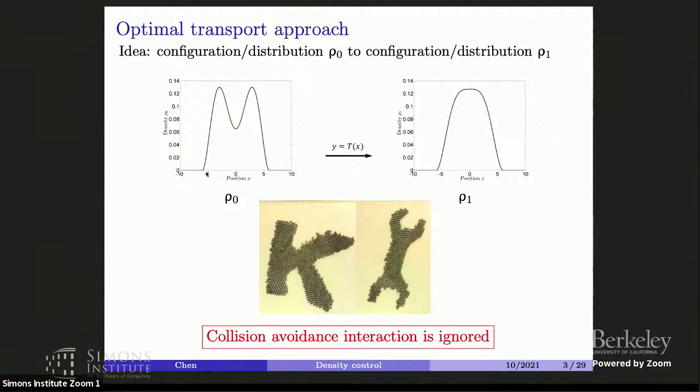This is a major difference between this type of control problem and the classic control problem, where you really want to control the performance of each individual. Because the robots are indistinguishable, it's natural to model the configuration as a distribution. We can model the initial state as one distribution and the target as another, and then the goal is to find a specific map to go from this configuration to that configuration — using either an optimal transport map or a gradient flow.